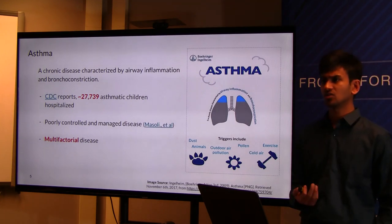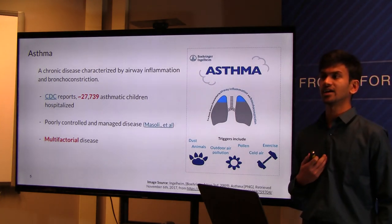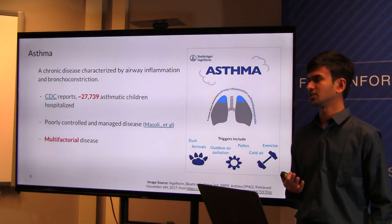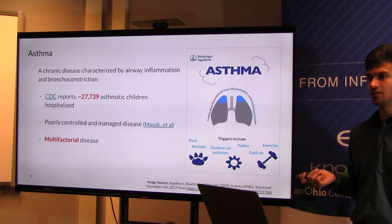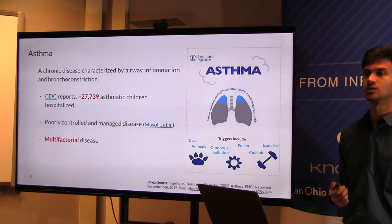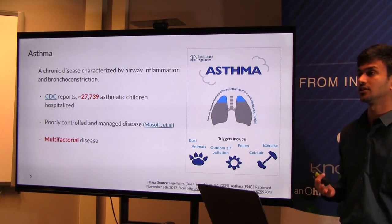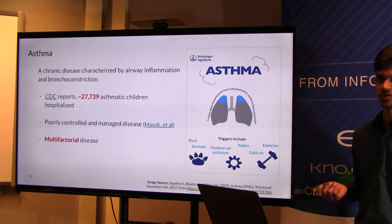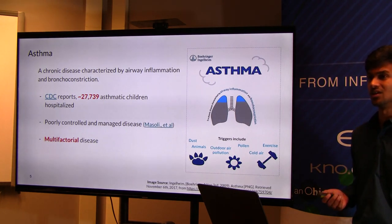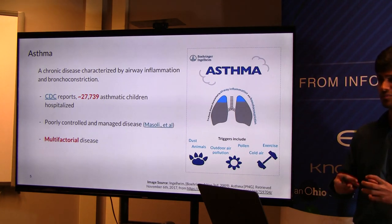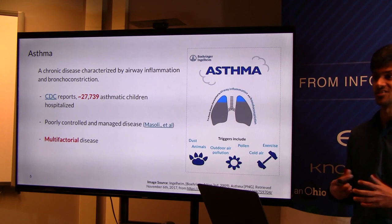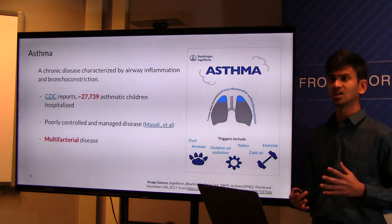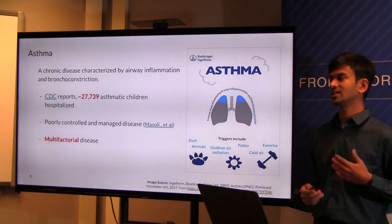Asthma, a high-burden chronic disease, is caused by airway obstruction in the lungs and is a major cause of hospitalization in the United States. The CDC reports that 27,739 children were hospitalized in 2014. It is one of the poorly controlled and managed diseases because of its multifactorial nature — meaning multiple different factors could impact and trigger symptoms. Symptoms can include coughing, wheezing, chest tightness, shortness of breath, and so on.